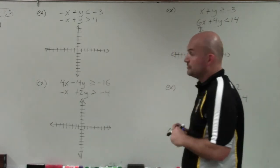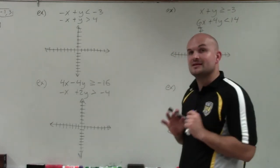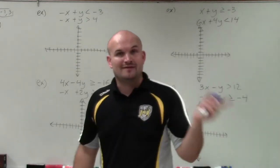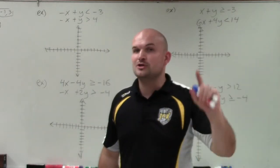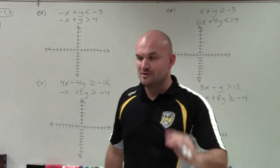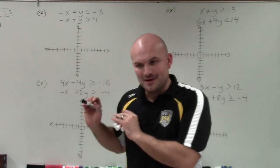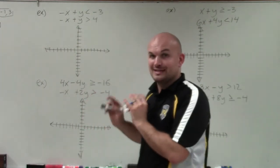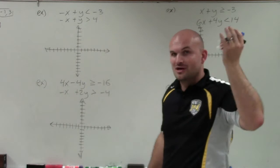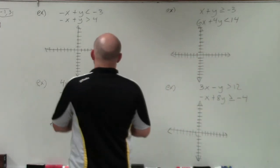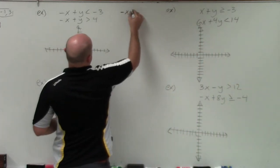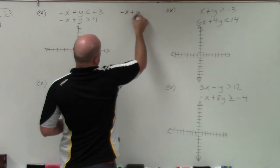The first thing we want to do is rewrite the equations in slope-intercept form. Also remember with inequalities, whenever you multiply or divide by a negative number, you have to switch the sign. I'm going to make sure I don't forget to do that, because even when I'm teaching, I'll sometimes forget about it.